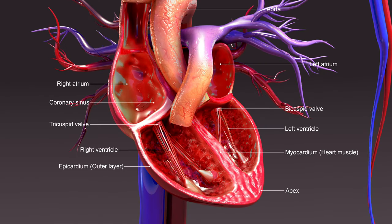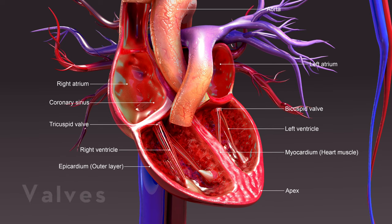In this image, we can see a detailed view of the heart's valves, which are essential for maintaining the one-way flow of blood. We have the tricuspid valve, which separates the right atrium from the right ventricle; the pulmonary valve, which separates the right ventricle from the pulmonary artery; the mitral valve, which separates the left atrium from the left ventricle; and the aortic valve, which separates the left ventricle from the aorta. These valves open and close in response to pressure changes within the heart, ensuring that blood flows in the correct direction and preventing backflow.